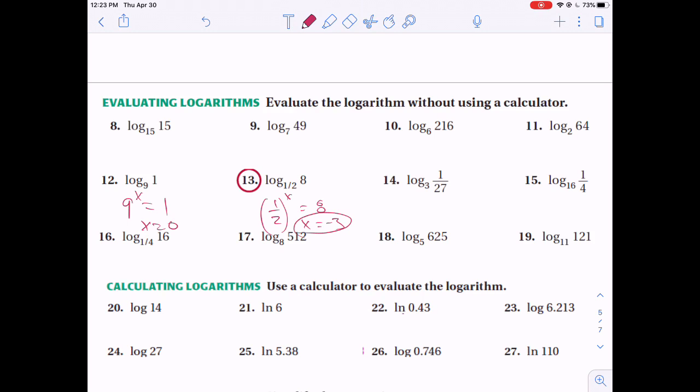One more fraction for you. This is base 3 to what power equals 1 over 27? Again, hopefully from our past work, 3 to the 3rd power gets you 27, but now we have to get it down to the denominator. So instead of it being x equals 3, x should be a negative 3 to drive it down.